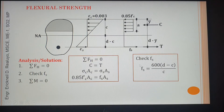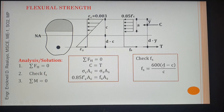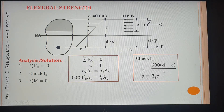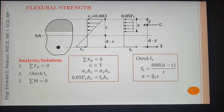To find the true value of fs, we need 'd', which is usually given, and 'c'. To obtain 'c', we first find the depth of the compression block 'a' using the code provision: a equals β₁c. Then we can solve for c.